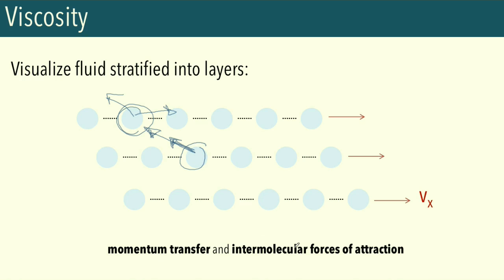This is where momentum transfer causes the so-called internal friction in our fluid and prevents it from flowing in the direction we want. As for intermolecular forces of attraction, if we want our layers to move in a direction, the molecules may be attracted to one another — instead of flowing past each other, they might start sticking to one another instead. That is another source of internal molecular friction.